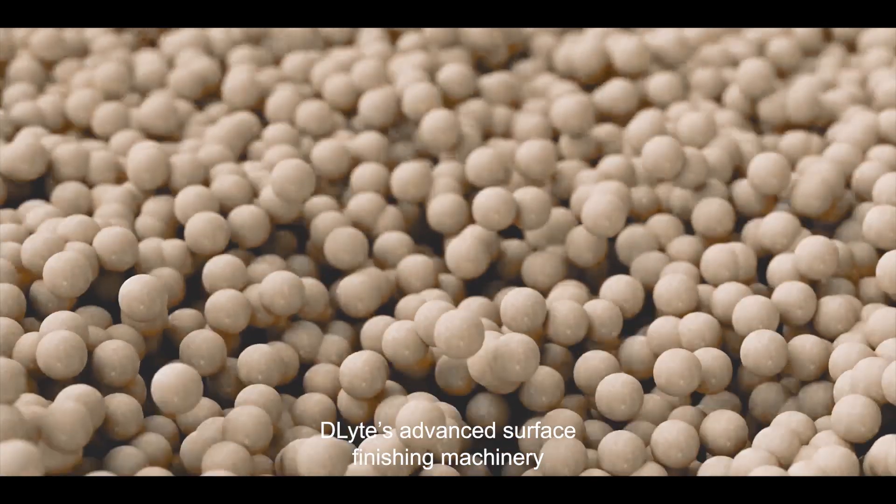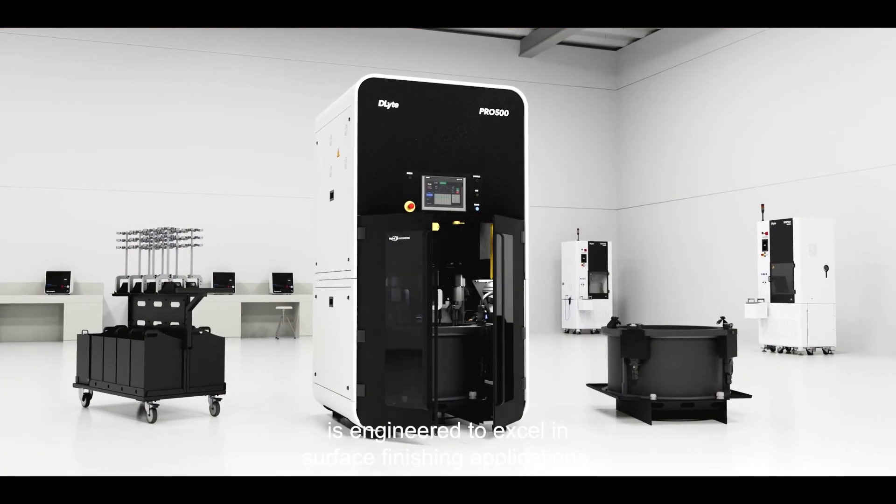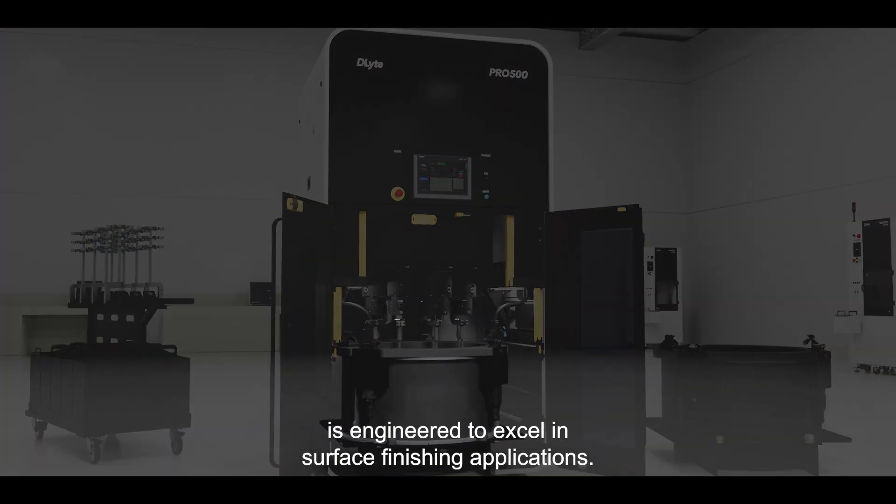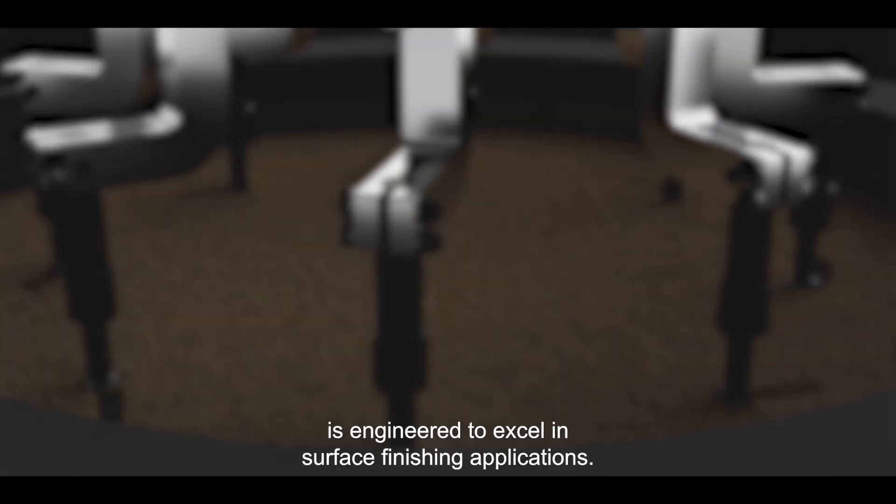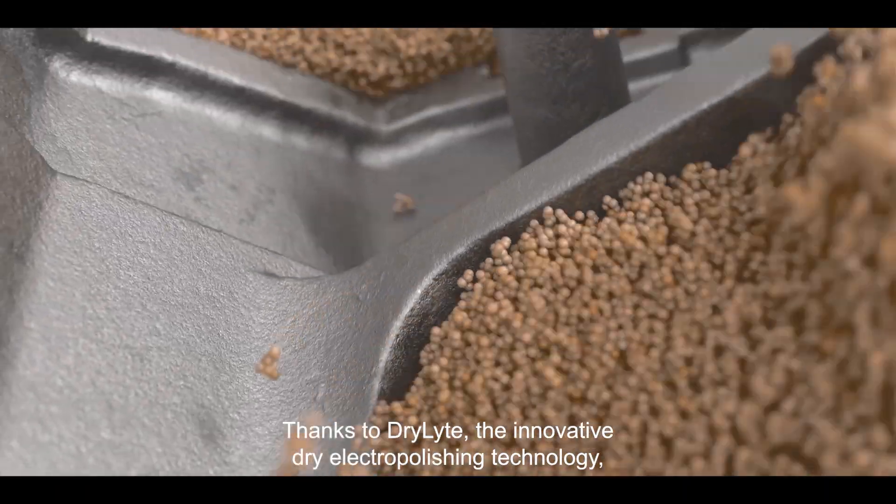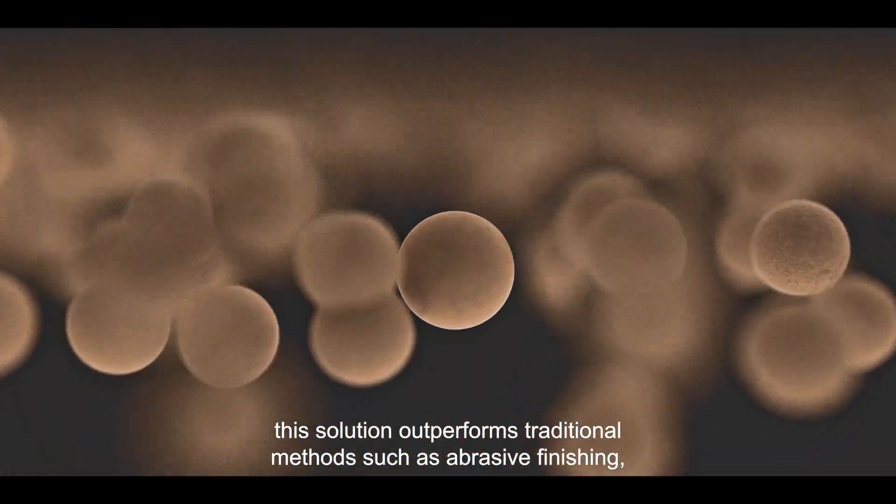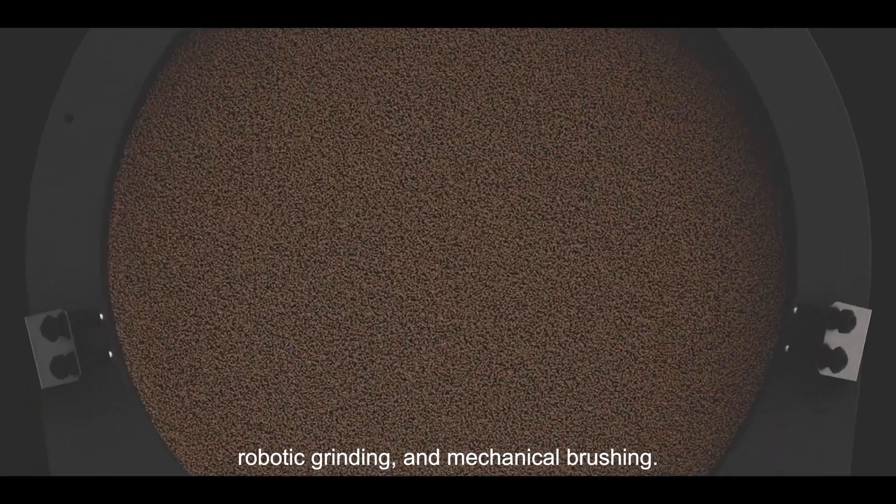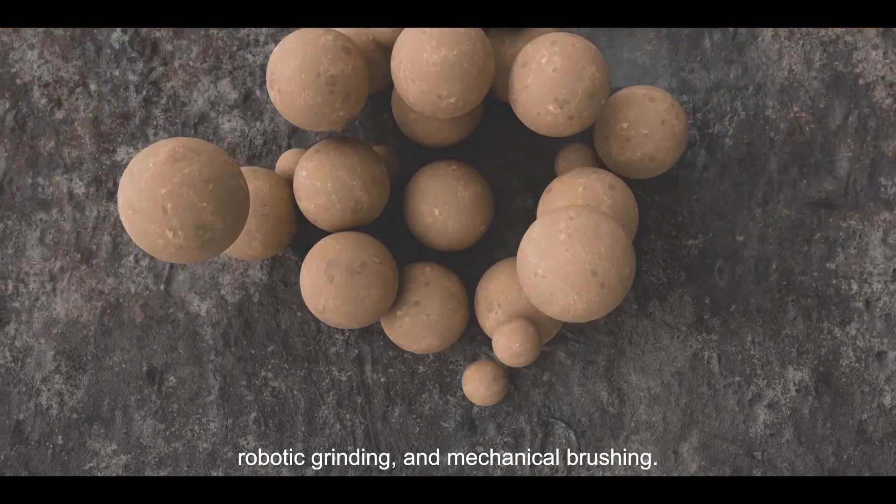D-Lite's advanced surface finishing machinery is engineered to excel in surface finishing applications. Thanks to DryLite, the innovative dry electro polishing technology, this solution outperforms traditional methods such as abrasive finishing, robotic grinding and metallic brushing.